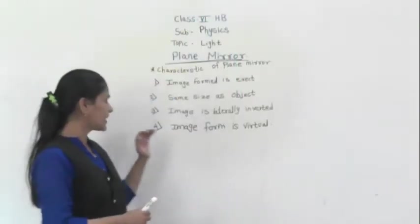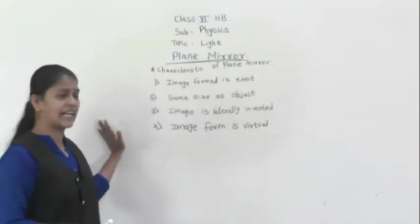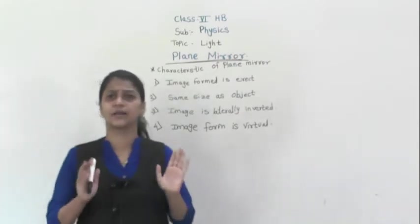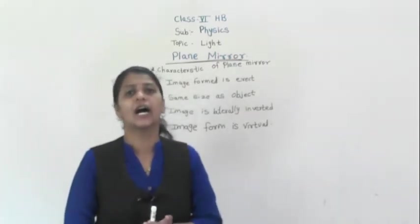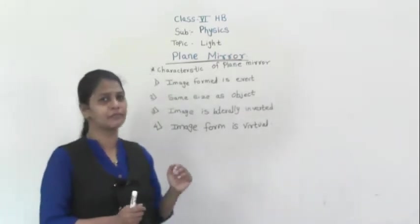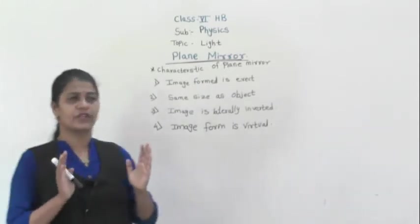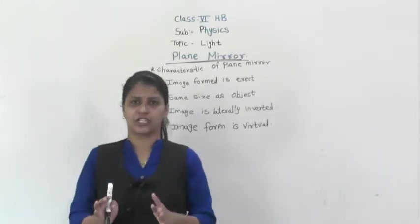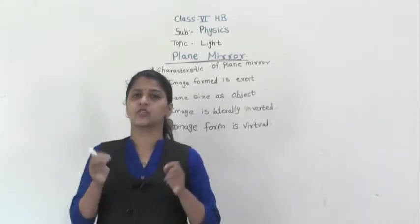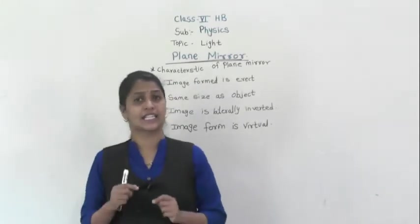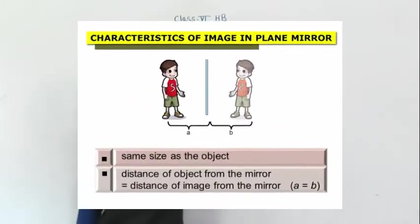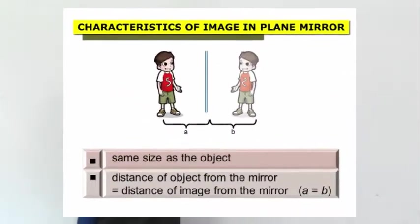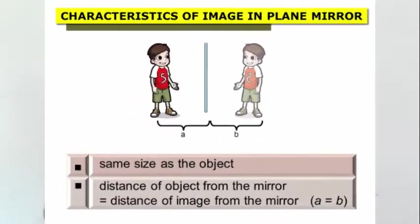There are some characteristics of the plane mirror. What do you observe in a plane mirror? First, if you see the image, the image is always erect. Erect means straight.